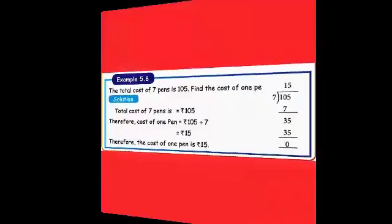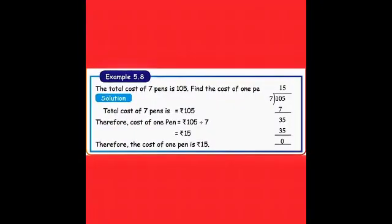Example 5.8. The total cost of 7 pens is 105 rupees. Find the cost of 1 pen. You want to find the cost of 1 pen. Solution: total cost of 7 pens is rupees 105. The cost of 1 pen equals 105 divided by 7.